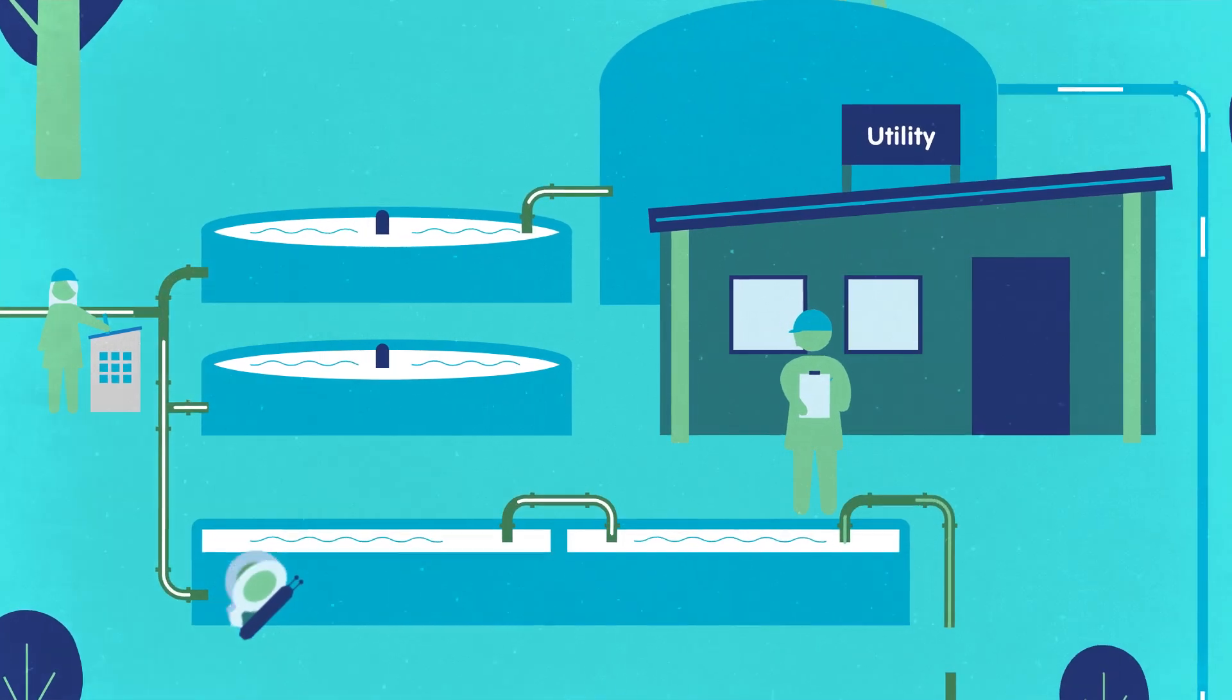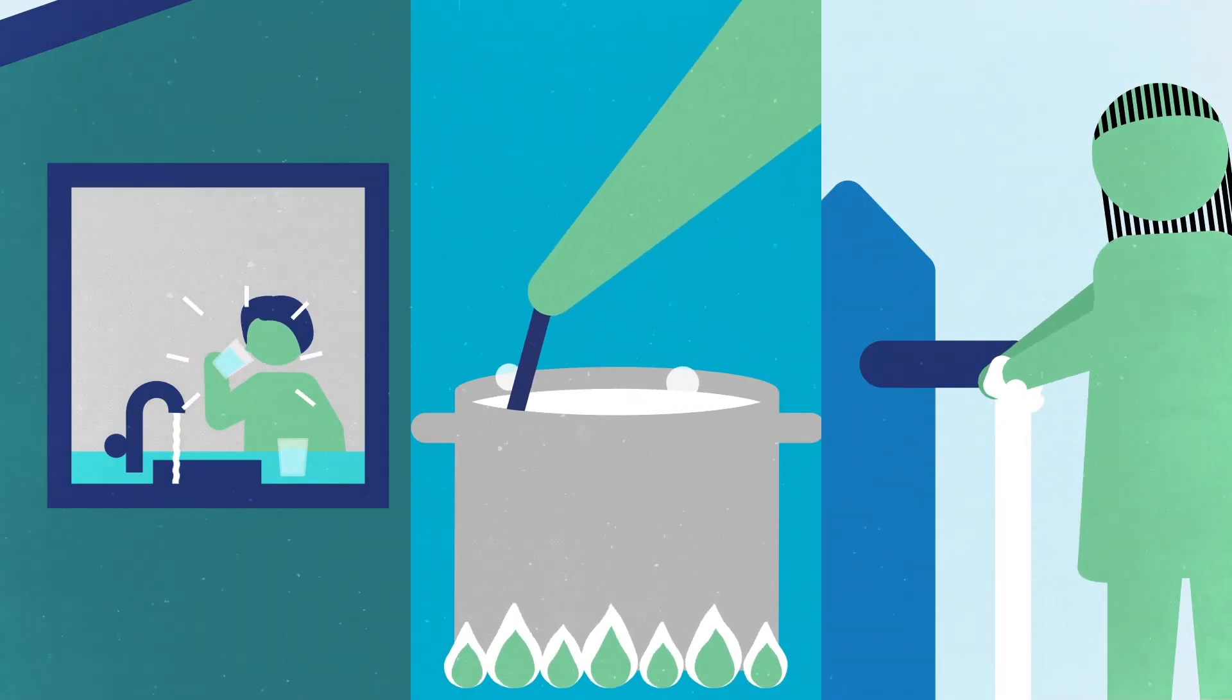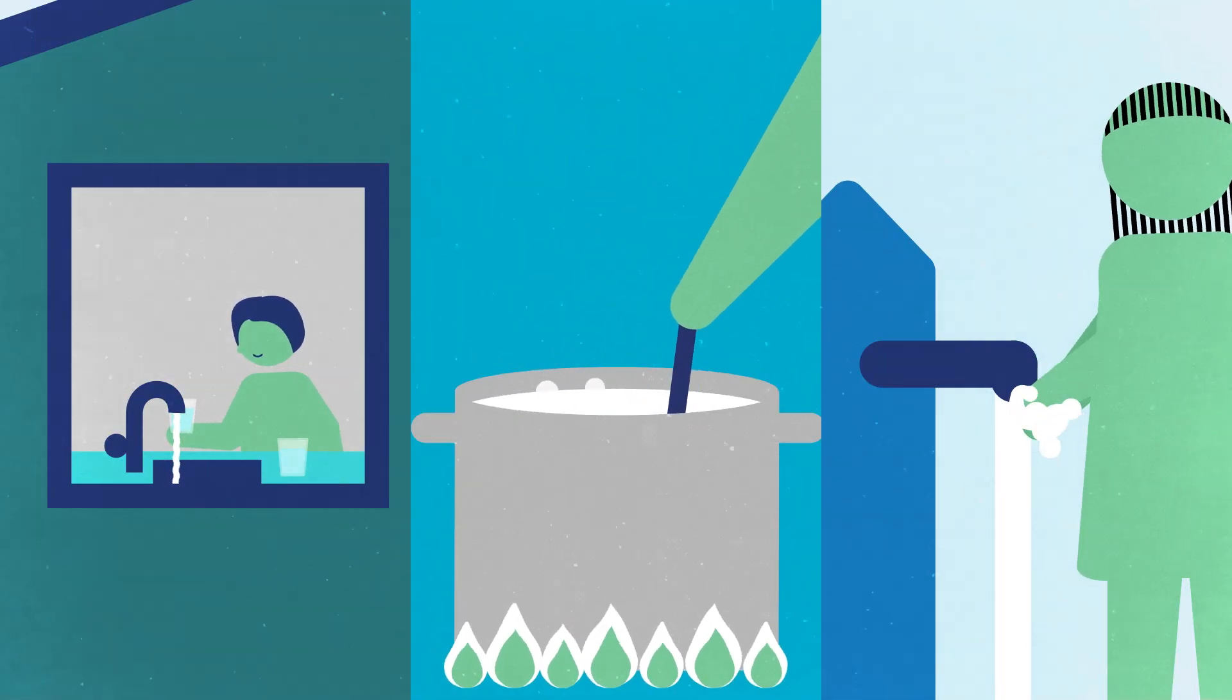Water is then distributed to users through pipes, pumps and taps, so that it can be used for drinking, cooking, hygiene and more.